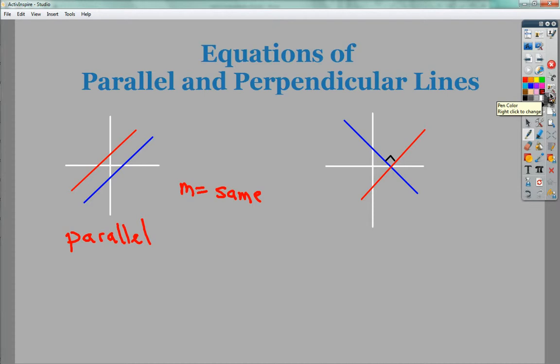Conversely, if they have the same slope and the same y-intercept, it's one line and not two lines, so you wouldn't be drawing two.